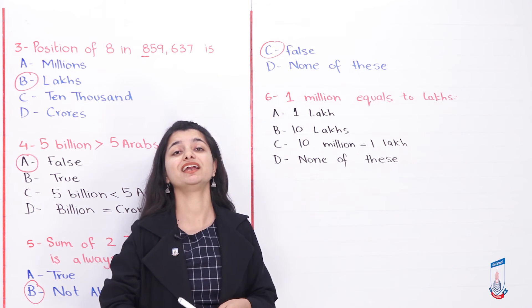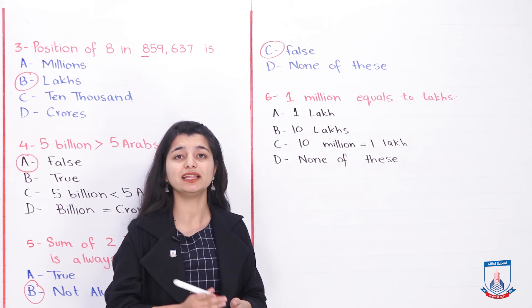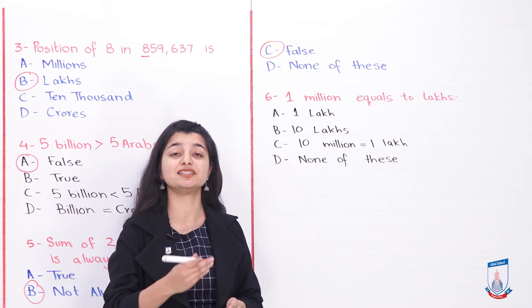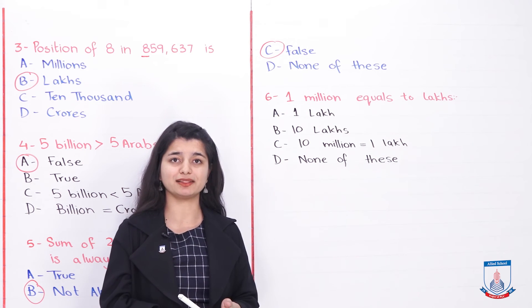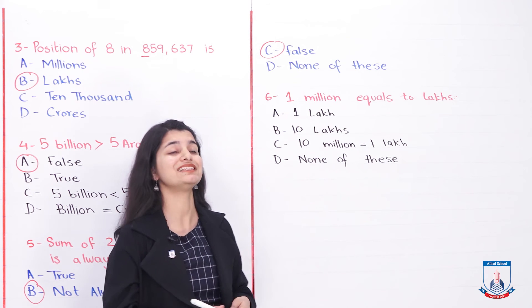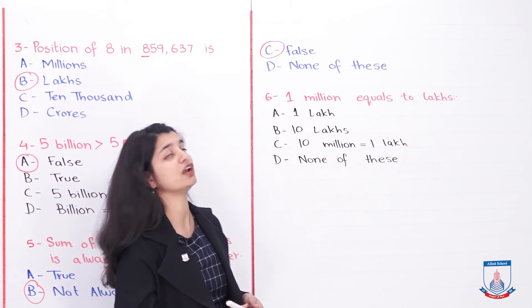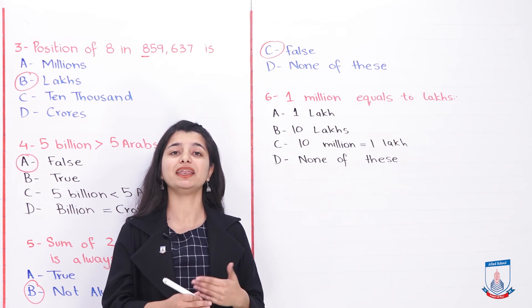Either you choose not always true, or then you incline yourself with false. In both things, you are almost right. Because the statement says that the sum of three-digit numbers always comes in three digits. This is a mistake. It is not always true. So you can write false. And the last option is none of these, but it is not applicable here because the answer is in our statements.